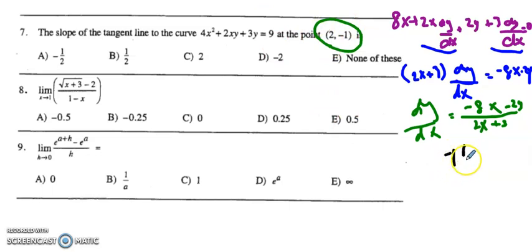I plug in x equals 2 and y equals negative 1, and that gives us negative 14 over 7, which is negative 2, and the answer is D.